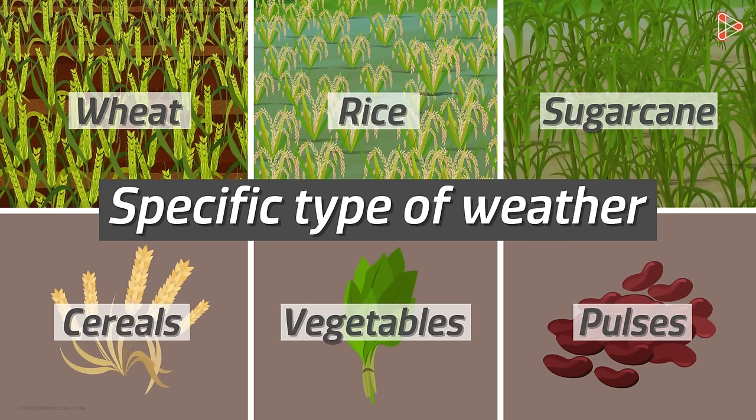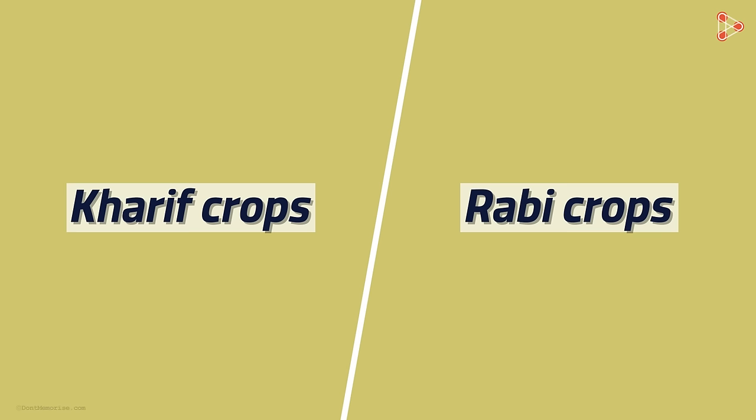Crops are therefore classified based on the season they are grown in. Can you guess which two types of crops are grown in India? Let me help you with that. The two major crop seasons in India are the season of the Karif crops and that of the Rabi crops.